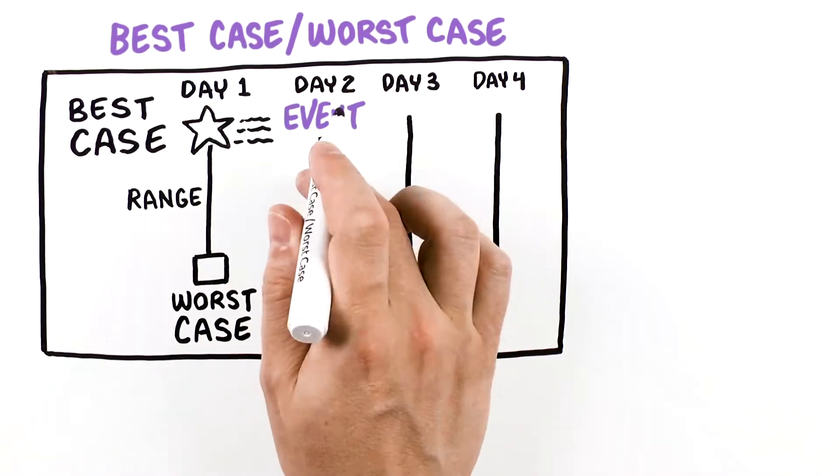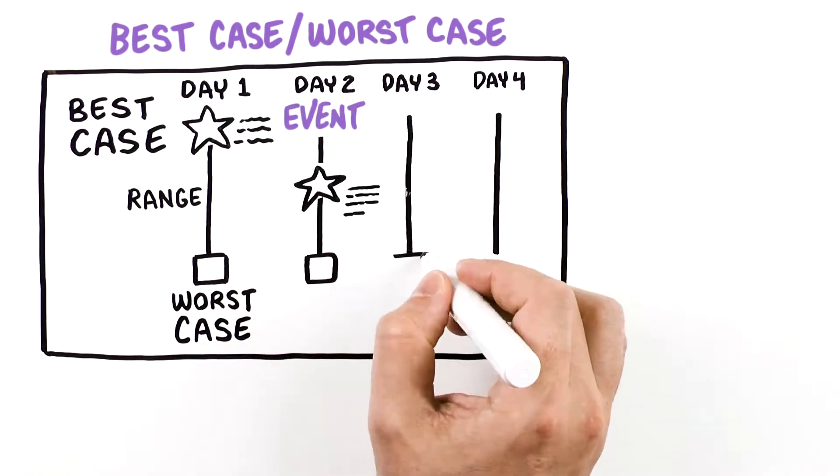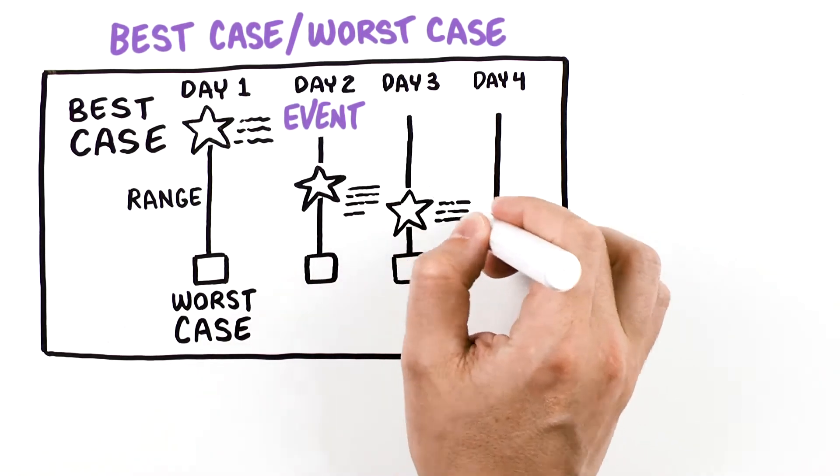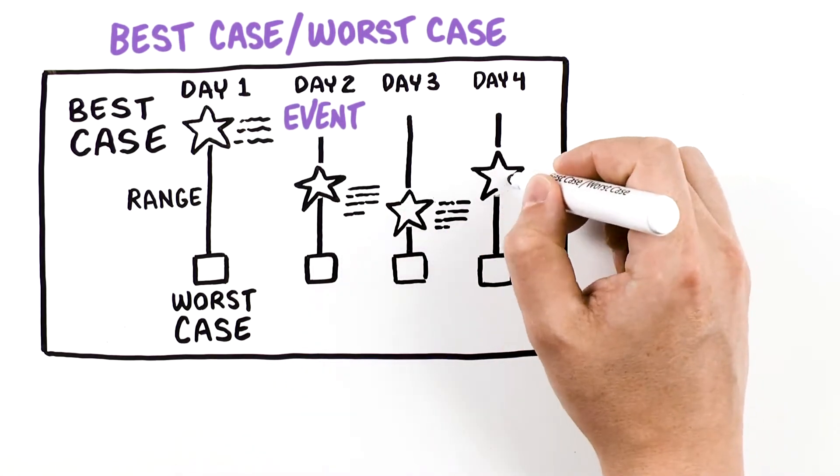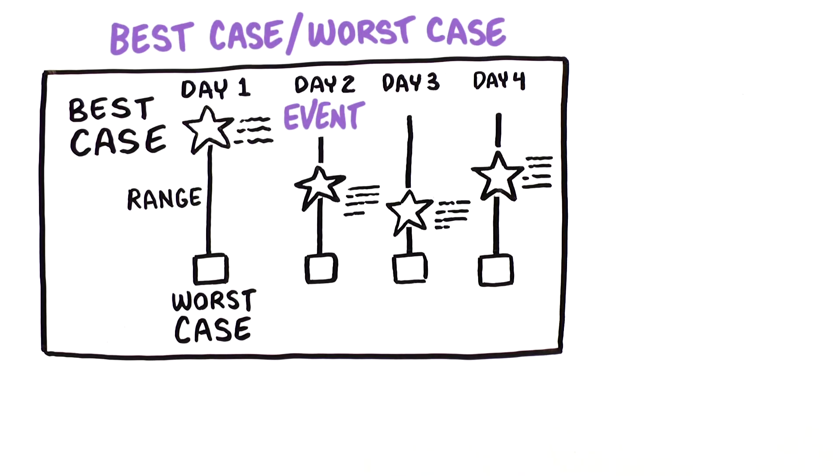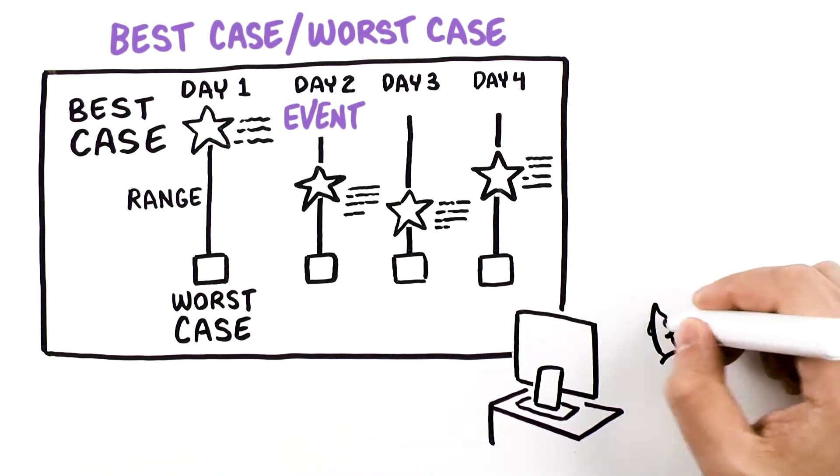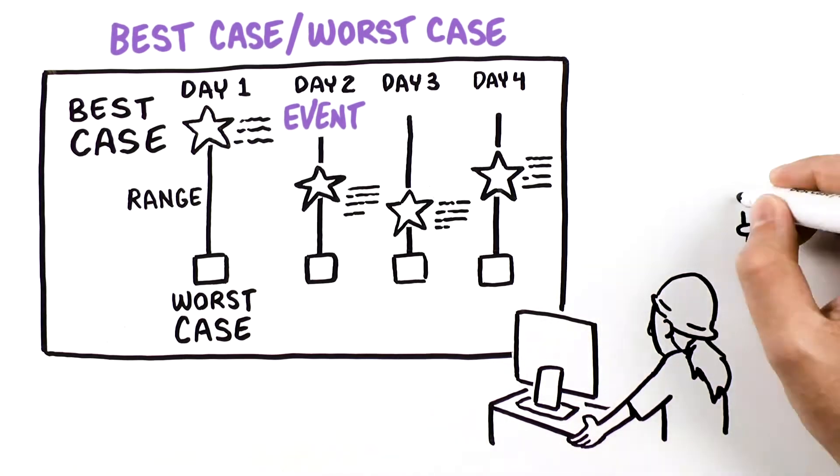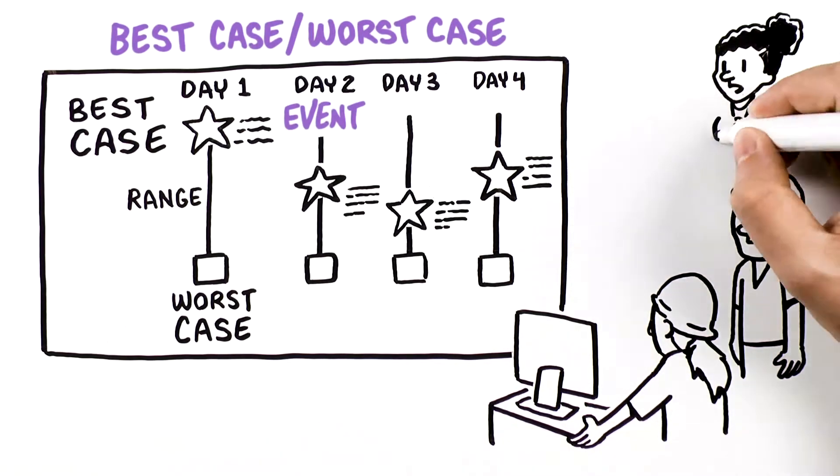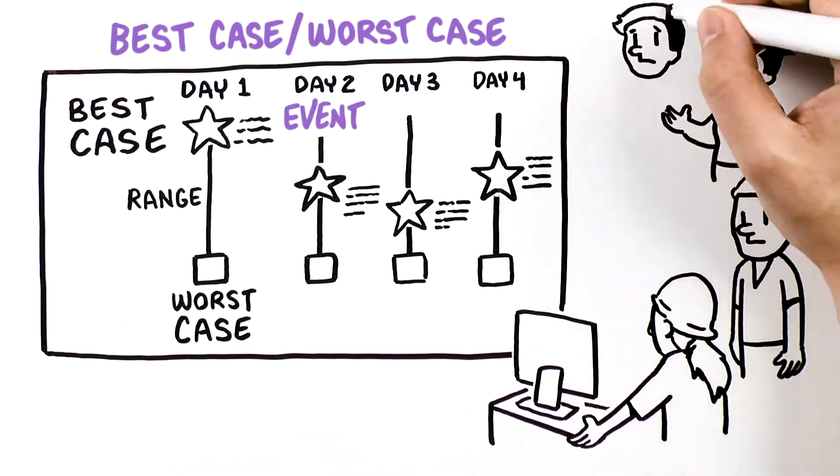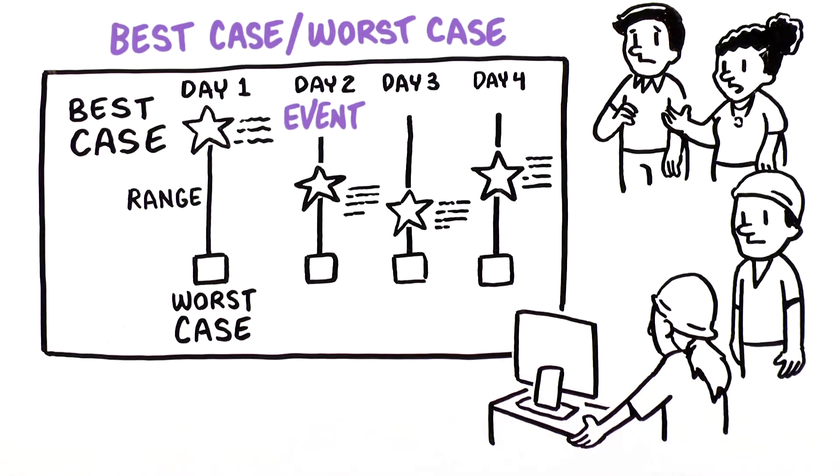Each day, a major event is recorded at the top of the column. You place a star on the line based on how the event changes the best case scenario. As time goes on, the placement of the star will go up or down, depending on how these events change the patient's overall story. This will keep everyone on the same page.